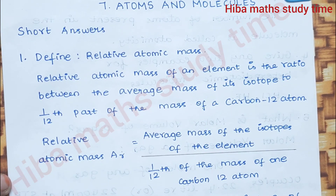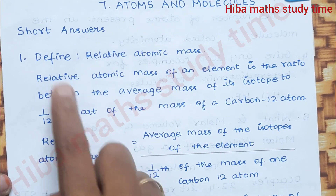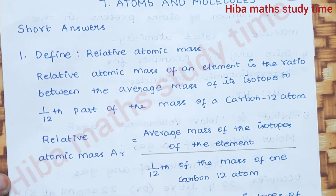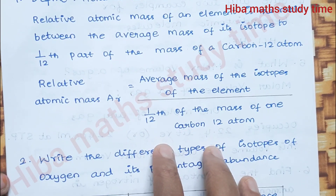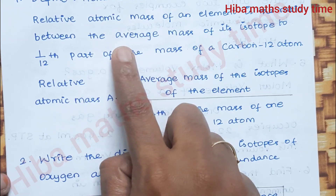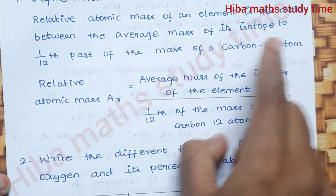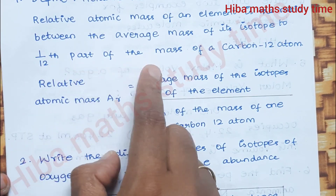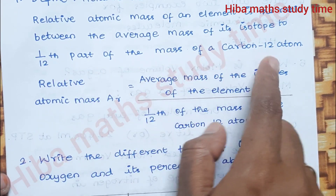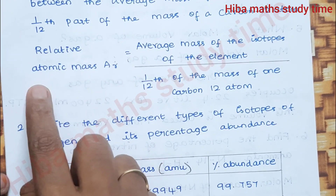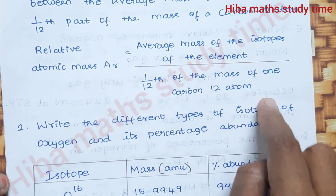First question: Define relative atomic mass. Relative atomic mass of an element is the ratio between the average mass of its isotopes to one-twelfth part of the mass of a carbon-12 atom.